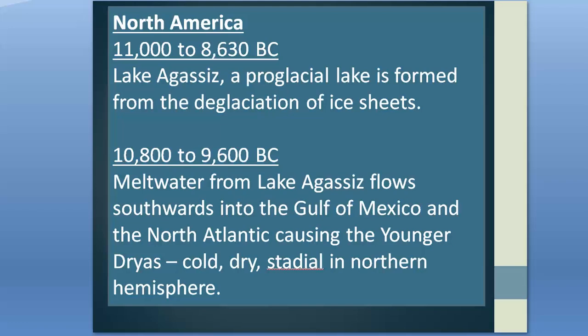As the ice sheet continued to melt northwards, the lake found a new outlet along the Minnesota-Ontario border, entering into a proglacial lake known as Lake Duluth. From Lake Duluth, the meltwater drained further south along the ancestral St. Croix and Mississippi river systems before eventually entering into the Gulf of Mexico.